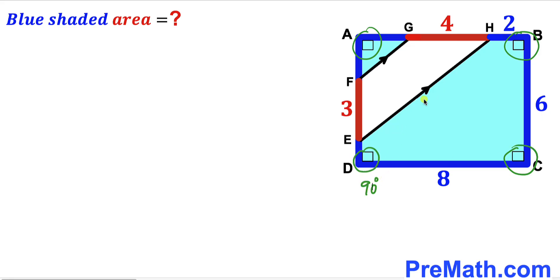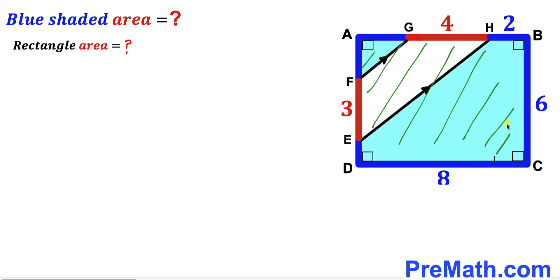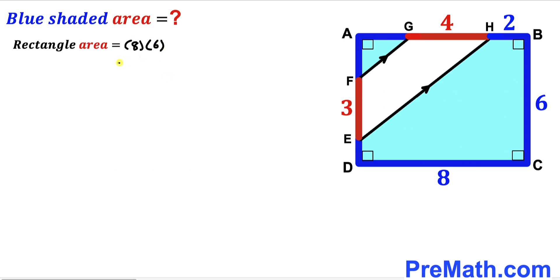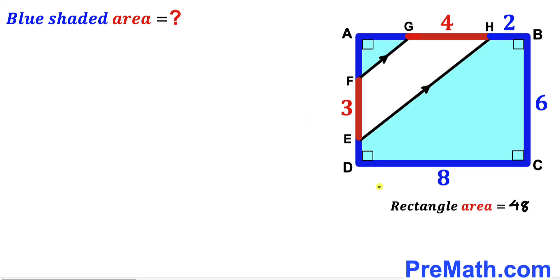Before we proceed, I'm going to calculate the area of the whole rectangle ABCD. The area of a rectangle is always equal to length times width. In our case the length is 8 units and the width is 6 units, so the area of rectangle ABCD is 8 times 6, which gives us 48 square units. We can also observe that since one side is 8 units, the opposite side AB is 8 units as well.